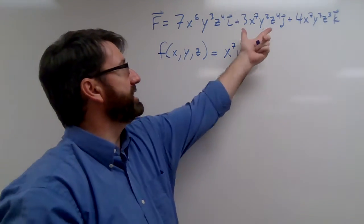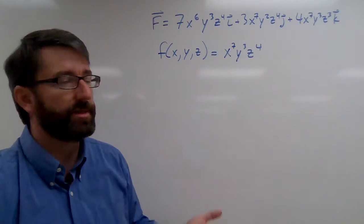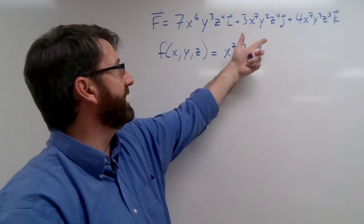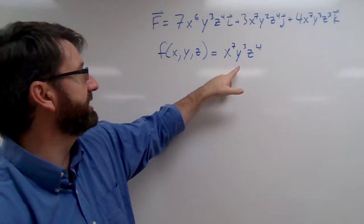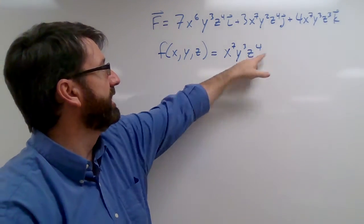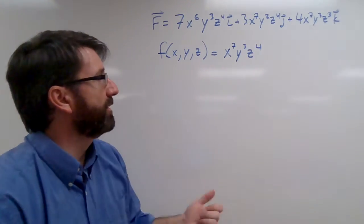Now let's check with this and see if the derivative with respect to y is going to give us this. In fact, it is. This would be 3x to the 7th, y squared, z to the 4th, which is exactly what we have there.